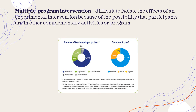The last threat to external validity is called multiple program interference. It is sometimes difficult to isolate the effects of an experimental intervention because participants may be involved in other complementary activities or programs. For example, if you are trying to use a new learning technique to improve student knowledge, but during your research those students are also attending other classes where knowledge enhancement is occurring, you are not able to recognize the learning effect occurring outside your classroom — and that is a threat to external validity.